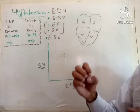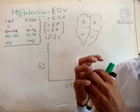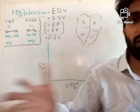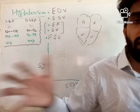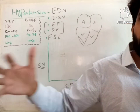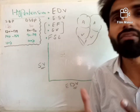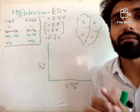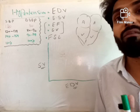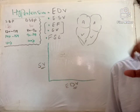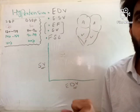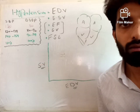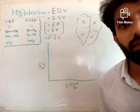So when end diastolic volume is more, there will be more blood in the ventricle, the ventricle will stretch more, cardiac muscle will stretch more, and they will relax back with more power. When they powerfully contract, more blood will be ejected per beat.